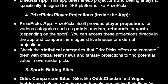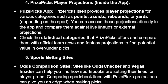Another way to get lineups is inside the app itself — PrizePicks provides player projections. PrizePicks itself offers player projections for various categories such as points, assists, rebounds, or yards. You can check the statistical categories that PrizePicks offers.